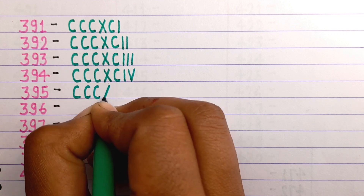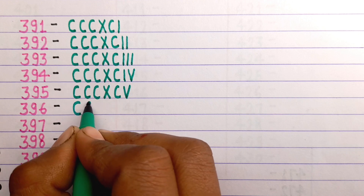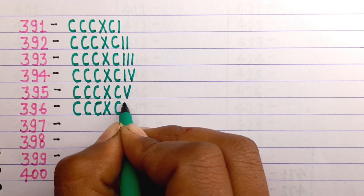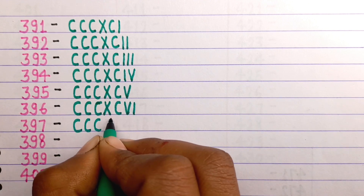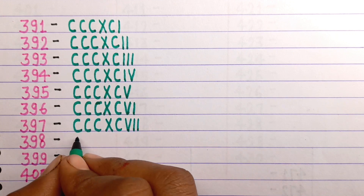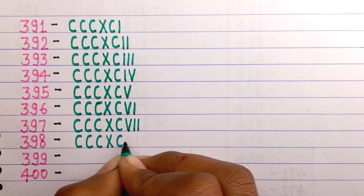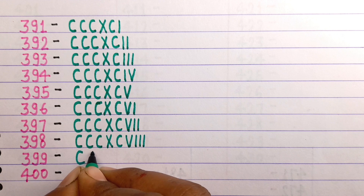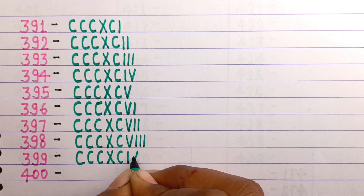395 is CCCXCV. 396 is CCCXCVI. 397 is CCCXCVII. 398 is CCCXCVIII. 399 is CCCXCIX.